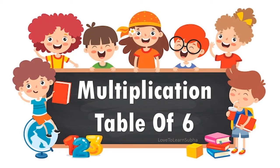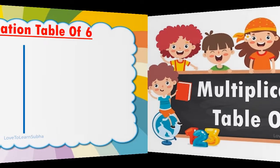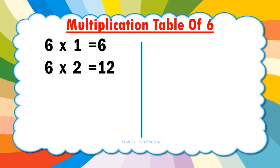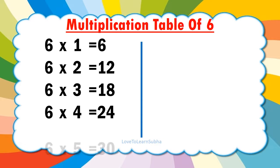Multiplication table of 6. 6 1's are 6. 6 2's are 12. 6 3's are 18. 6 4's are 24. 6 5's are 30.